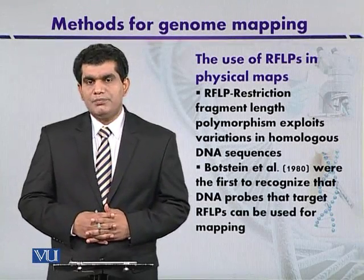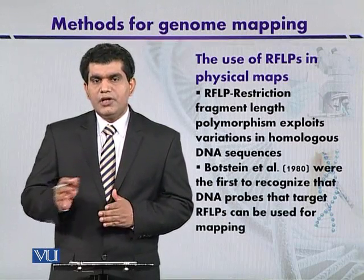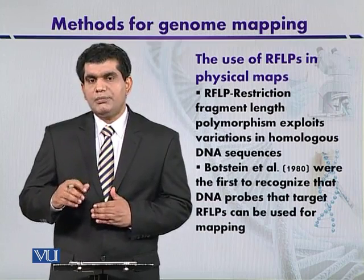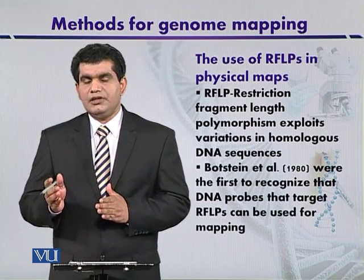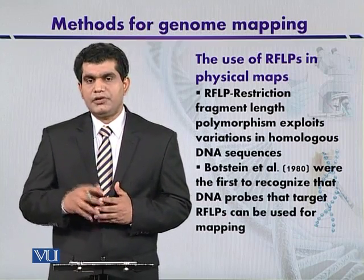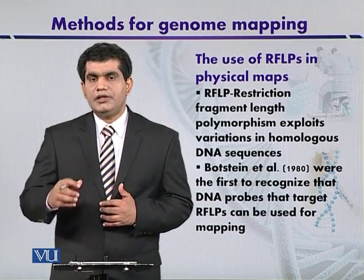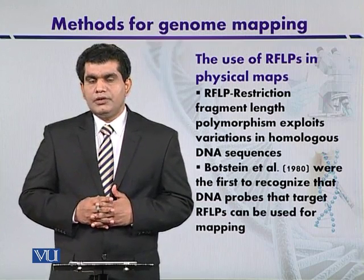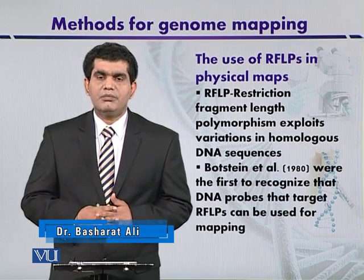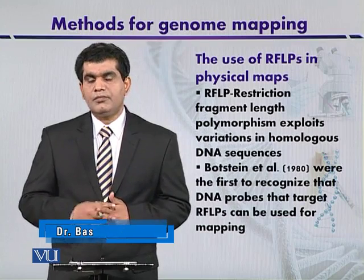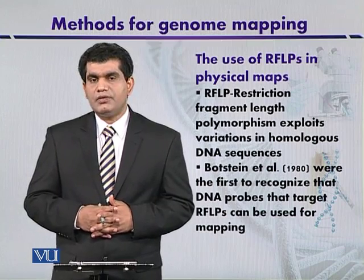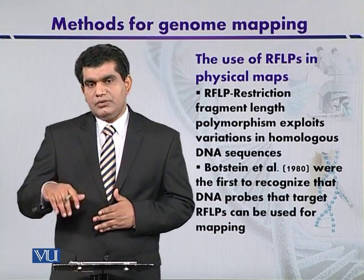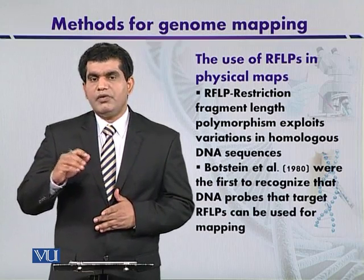The use of RFLPs in physical maps — in previous lectures we studied that RFLPs is a very important technique to study the polymorphic differences between the DNA of individuals. It stands for Restriction Fragment Length Polymorphism and exploits sequence variations within the genome. Most of the human genome, around 99.9%, is similar, and only about 0.1% of the genome is different.